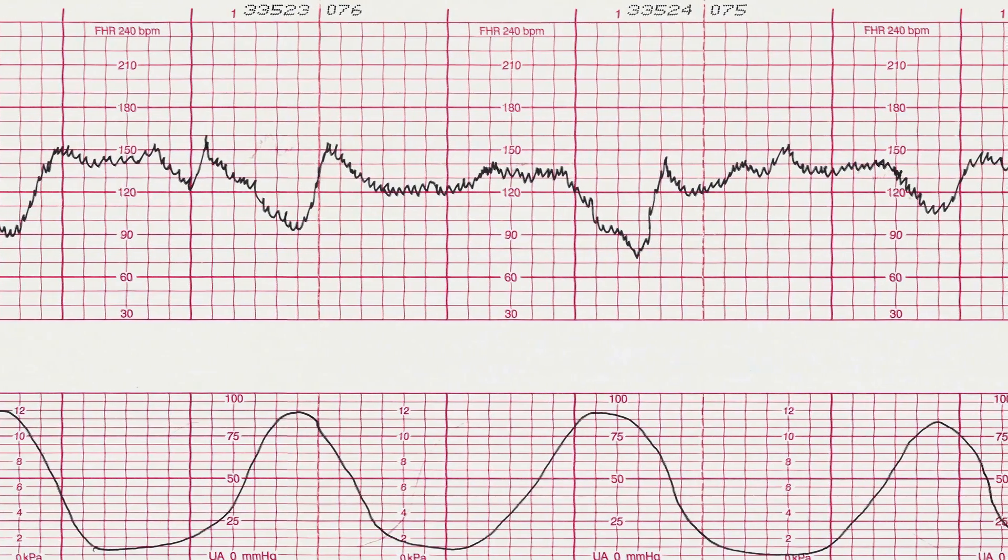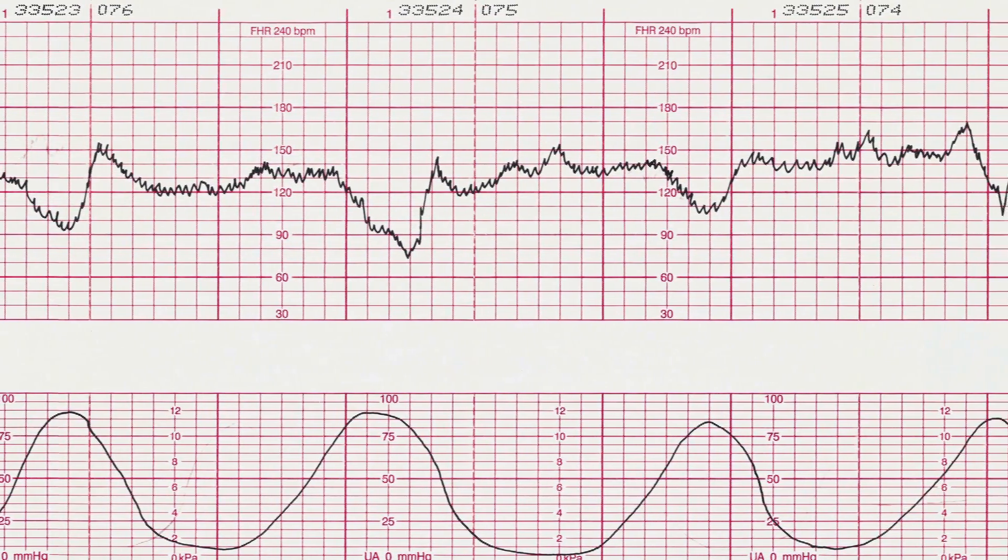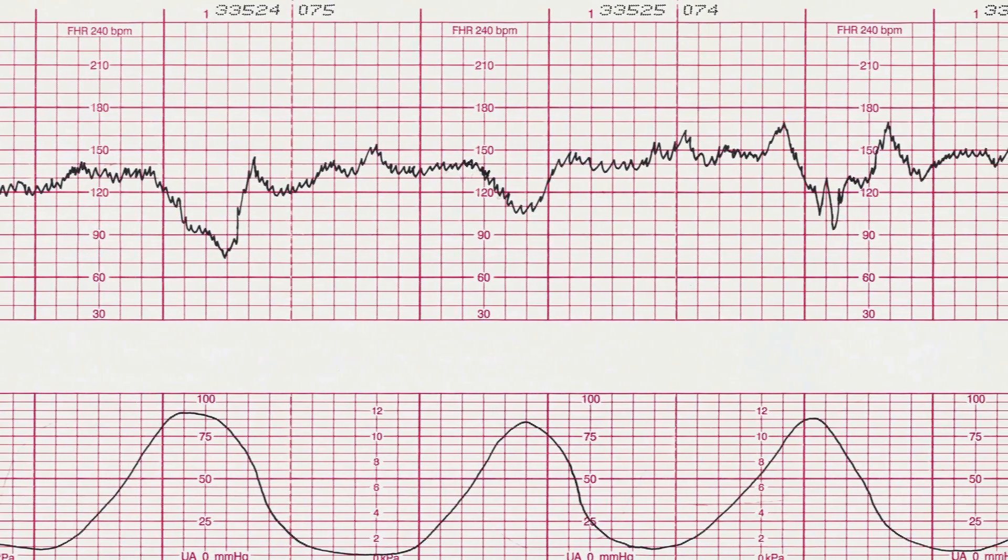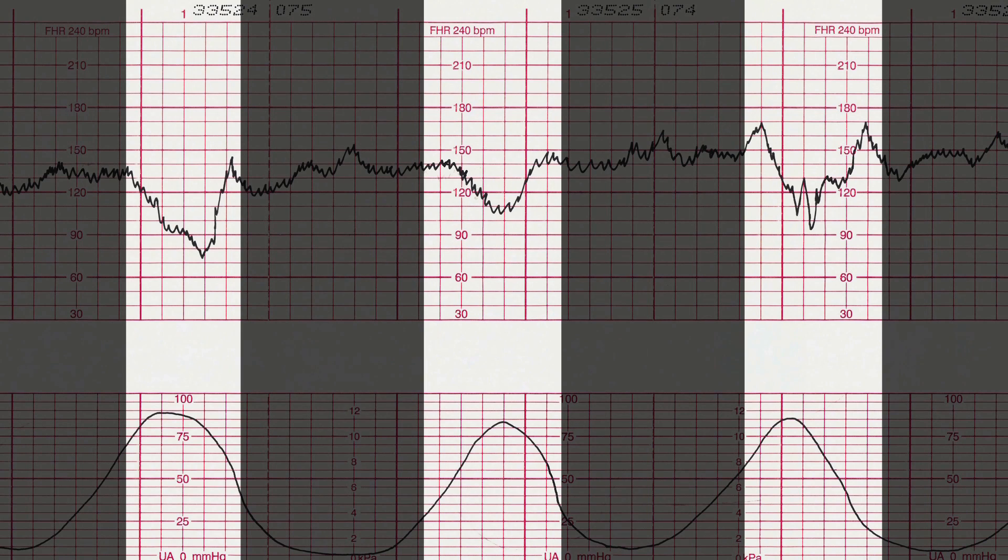Variable decelerations are called variables because they vary in shape, and they can vary in where they occur in relationship to the contraction. Variable decelerations can be U-shaped, W-shaped, or V-shaped. They typically drop quickly and return to the baseline quickly.